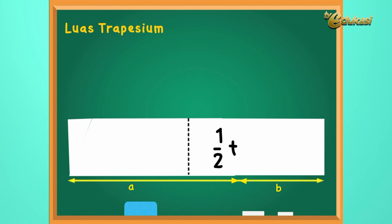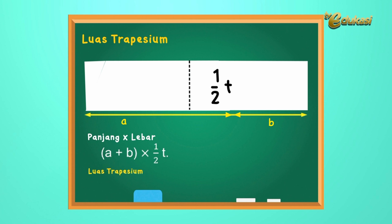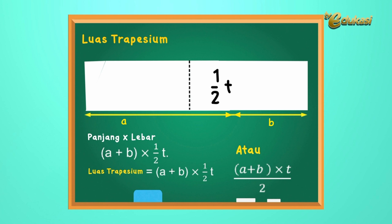Anak-anak, masih ingat kan cara menghitung luas persegi panjang? Pasti ingat ya. Ya, betul, panjang kali lebar. Atau di sini, (A + B) dikali setengah T. Sehingga, luas trapezium sama dengan (A + B) dikali setengah T, atau (A + B) dikali T per 2. Mudah ya, anak-anak? Dengan konsep matematika nalaria realistik, matematika menjadi mudah dan membuat kita lebih cerdas.